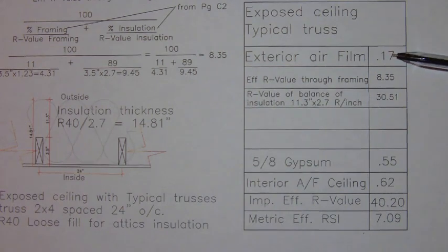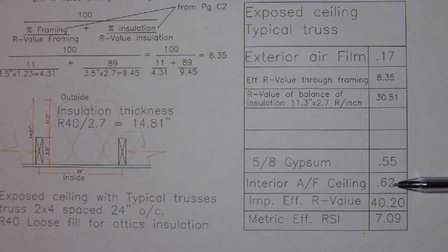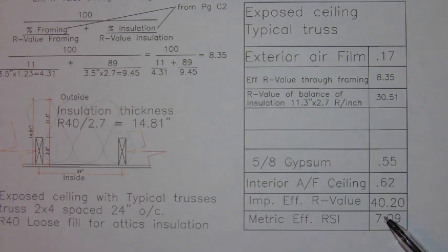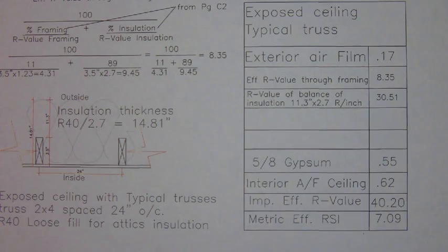Now you can add all those individual R-values, and that gives us a total effective R-value of 40.2 for this particular assembly. The metric equivalent RSI would be 40.2 divided by 5.67, and that will give you 7.09.